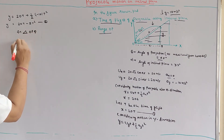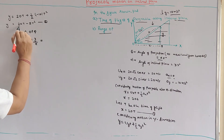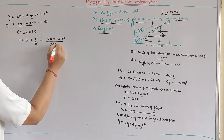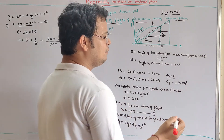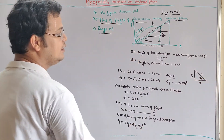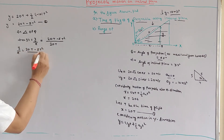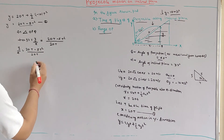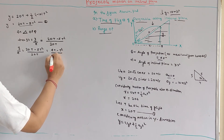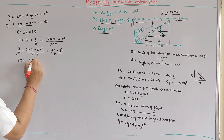We can write tan 37 is equal to y by x. Substituting y equals 20t minus 5t squared and x equals 20t, and since tan 37 is 3 by 4, we get: 3 by 4 equals (20t minus 5t squared) by 20t. Simplifying by dividing by 5 and then by 4, we get: 3t equals 4t minus t squared, which rearranges to t squared minus t equals 0, giving t(t minus 1) equals 0.